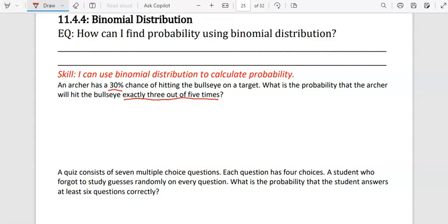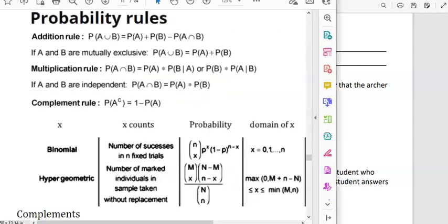Let's refer back to the booklet to look at the formula. For binomial, x is going to be the number of successes in n fixed trials, and p is the probability of that success. So the formula for this would be n choose x times the probability to the x power times 1 minus the probability to the n minus x power.